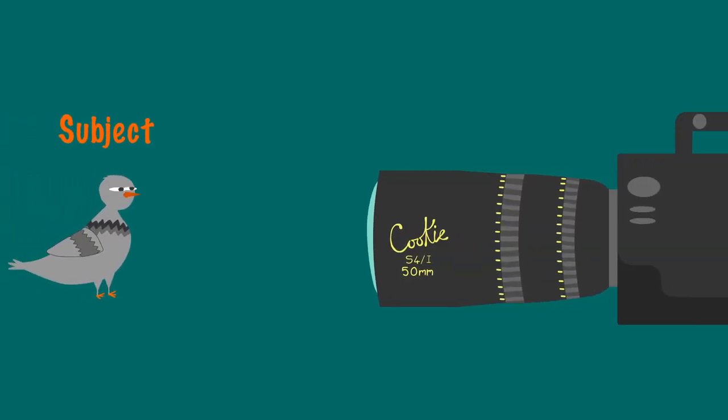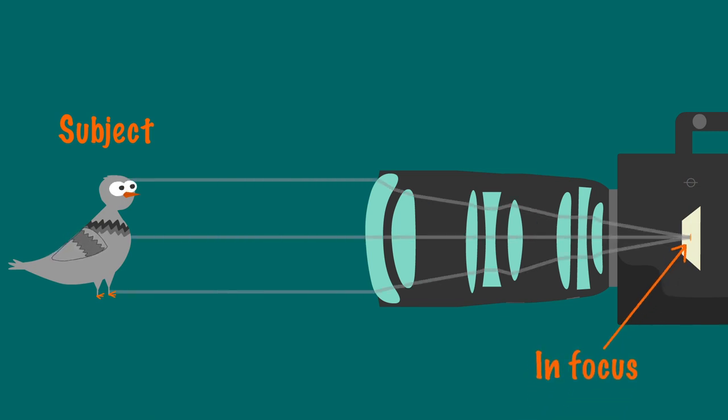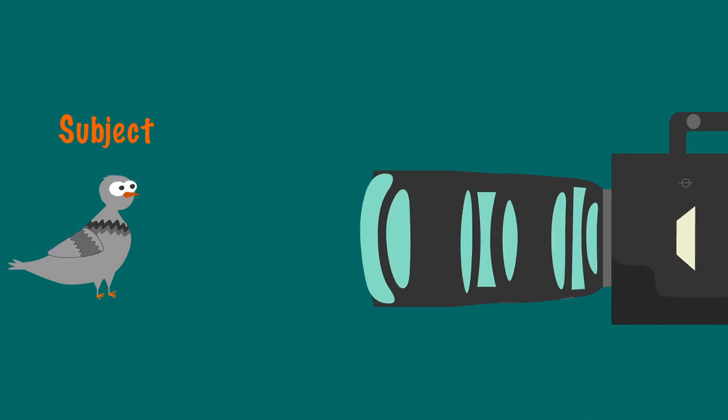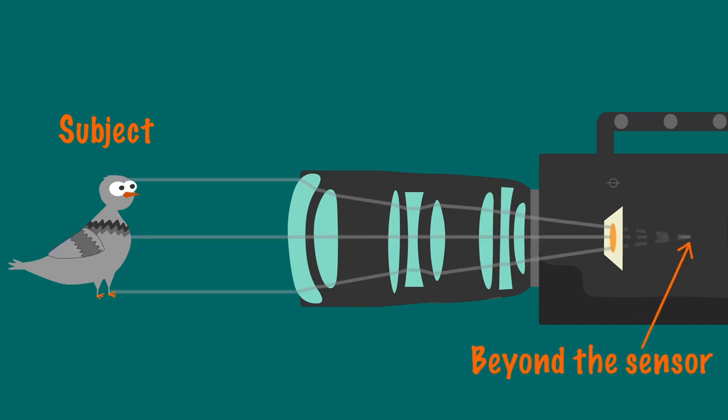Here is an example to show where this may come in handy. Our subject is as close to the camera as it can be while remaining in focus. If we move them closer together, the subject's point of focus has now moved beyond the sensor, and the lens we have on can't focus to that point. Therefore, our image is now out of focus.